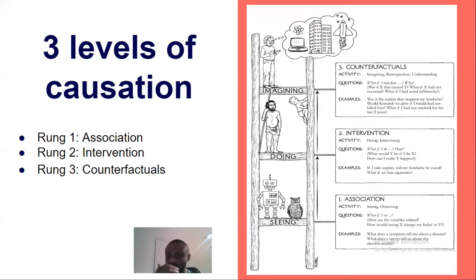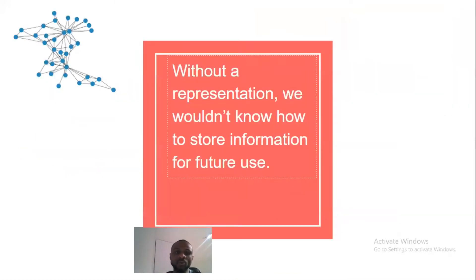So it's such an amazing framework, which is basically: what if I see is association, what if I do is intervention, and what if I had done is counterfactual. And I also learned the book says that without representation, we wouldn't really know how to store information for future use. Our brain is a semantic network, we need to have a representation, it's kind of like a graph.